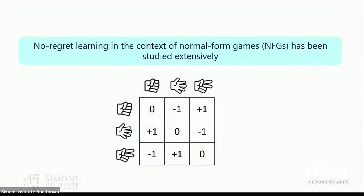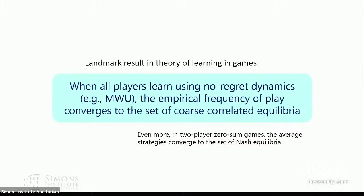The starting point for this talk is the realization that at this point we know a lot about no-regret learning in normal form games. No-regret learning in the context of normal form games has been studied extensively. Normal form games are strategic interactions in which every player acts simultaneously — each player has a set of actions and picks one, and their utility depends on the tuple of actions chosen by all players.